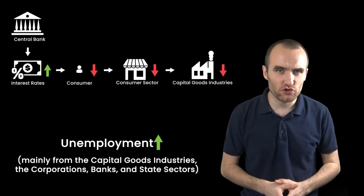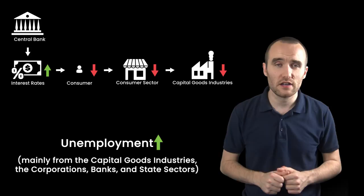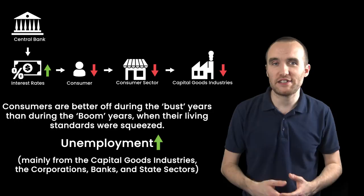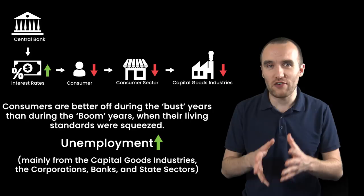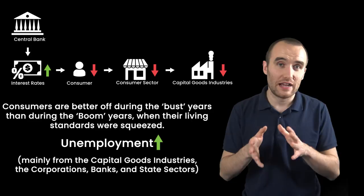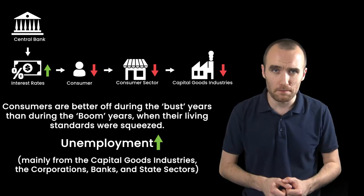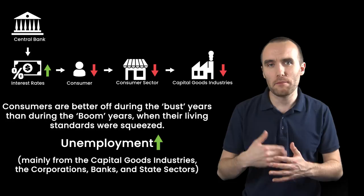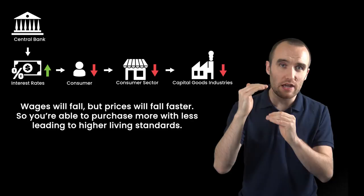But here's something that may surprise a few people to learn: for the consumers who are still employed, these bust years are actually a time of plenty. During the boom years, you tend to see capital goods employees receiving much higher pay rises compared to non-capital goods employees, thanks to all that inflation. Now though, the capital goods employees are seeing their wages cut or finding themselves unemployed. Meanwhile, living standards for those in the consumer sector, which were squeezed during the boom, are now rising. Again, economic reality is fixing the manipulations caused by the boom. Wealth that was being stolen from the consumer and retail sectors and redistributed to the public sector and the capital goods industries is now coming back to the consumer, as it should do. Yes, wages for the consumer sector will be falling, but prices will be falling even quicker, resulting in higher living standards overall.